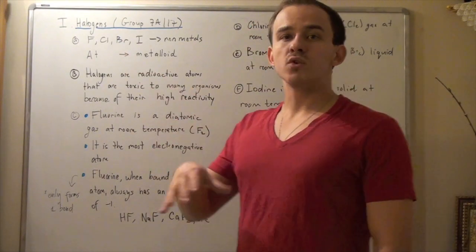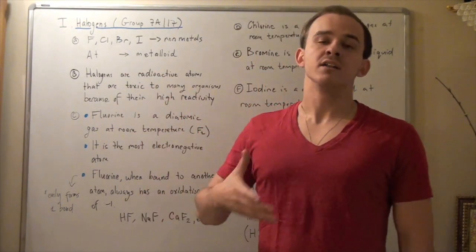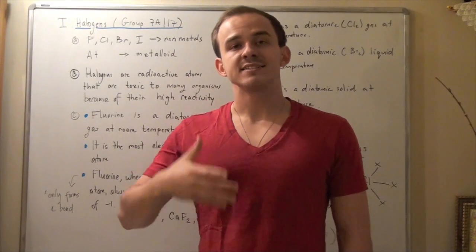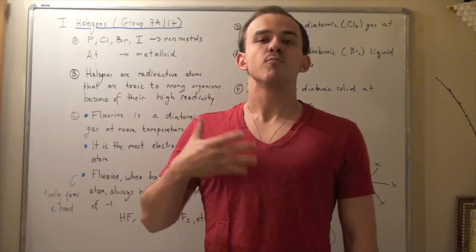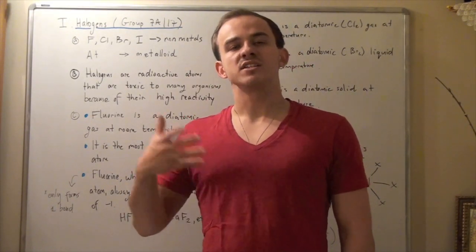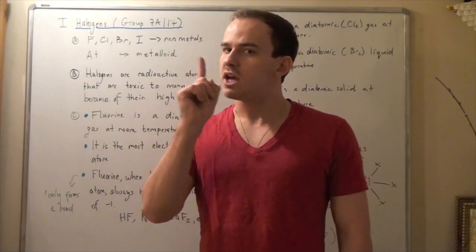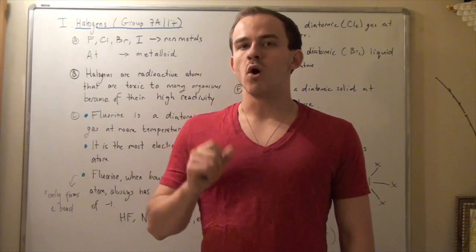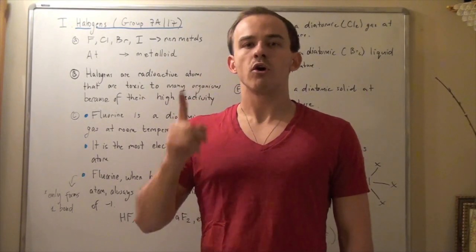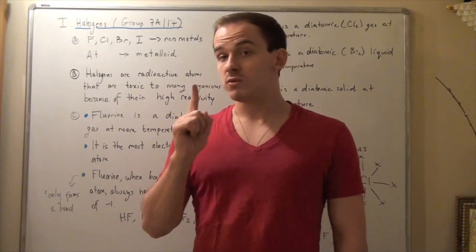Fluorine is the most electronegative atom out there. In other words, it has the highest affinity for electrons. It is more likely to take electrons away than any other atom. Fluorine also only has one oxidation state, negative one, and that means it only forms one bond, no more, only one bond.